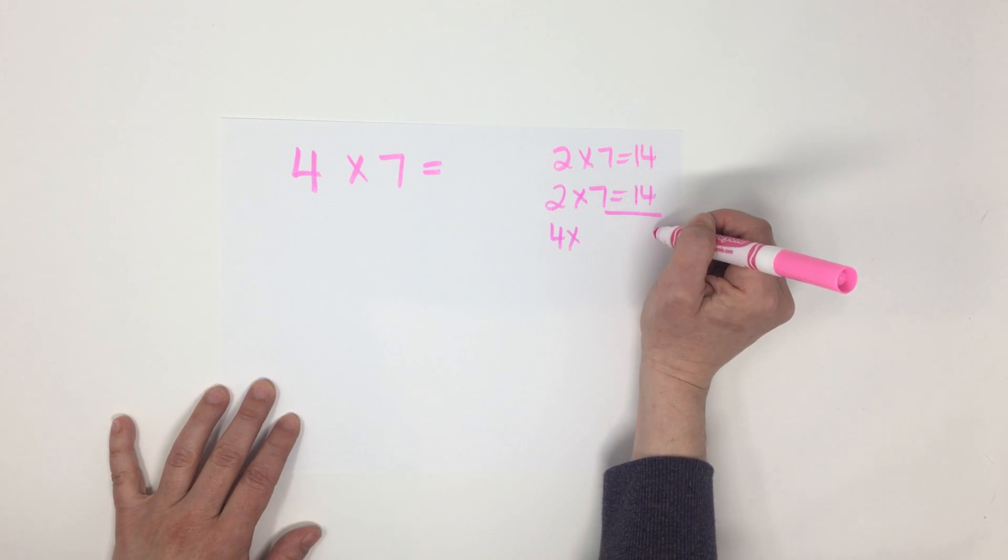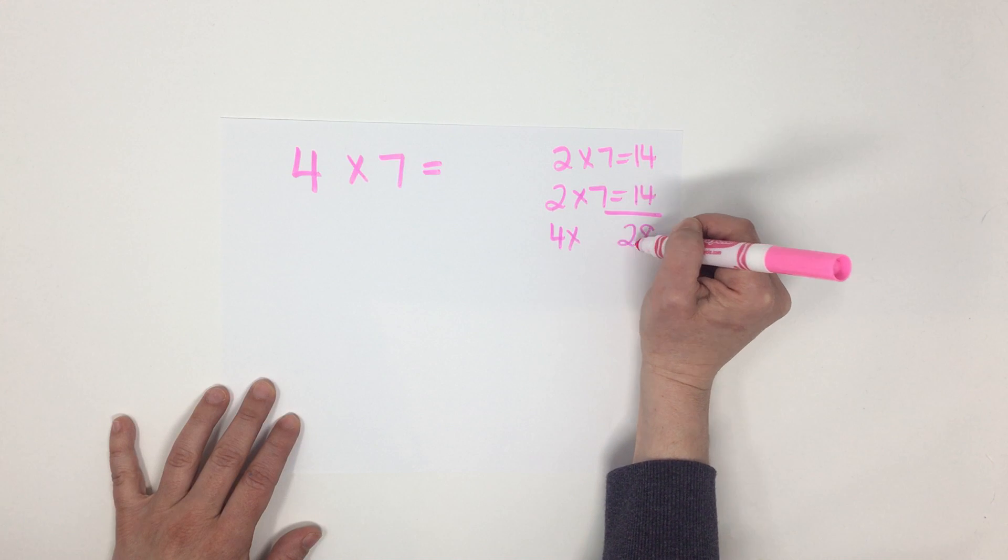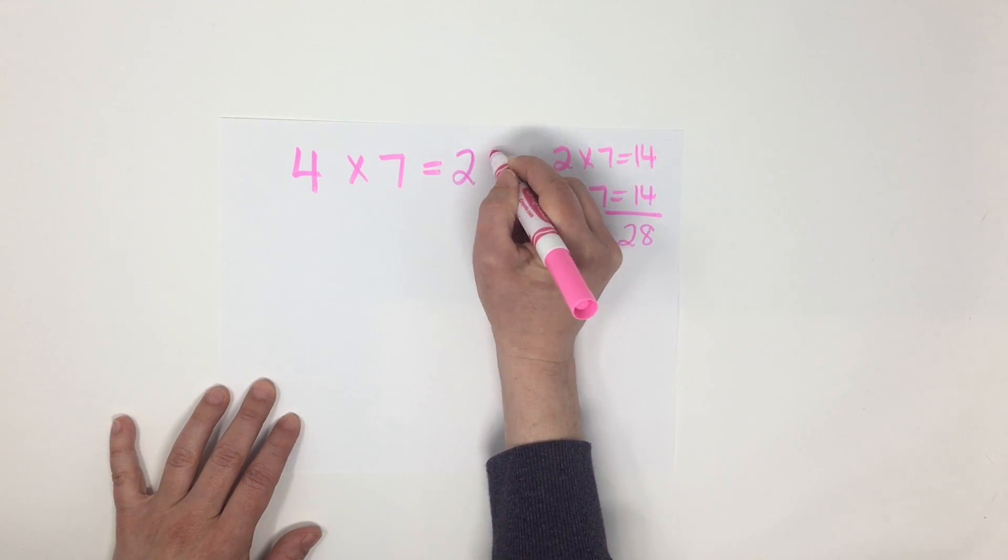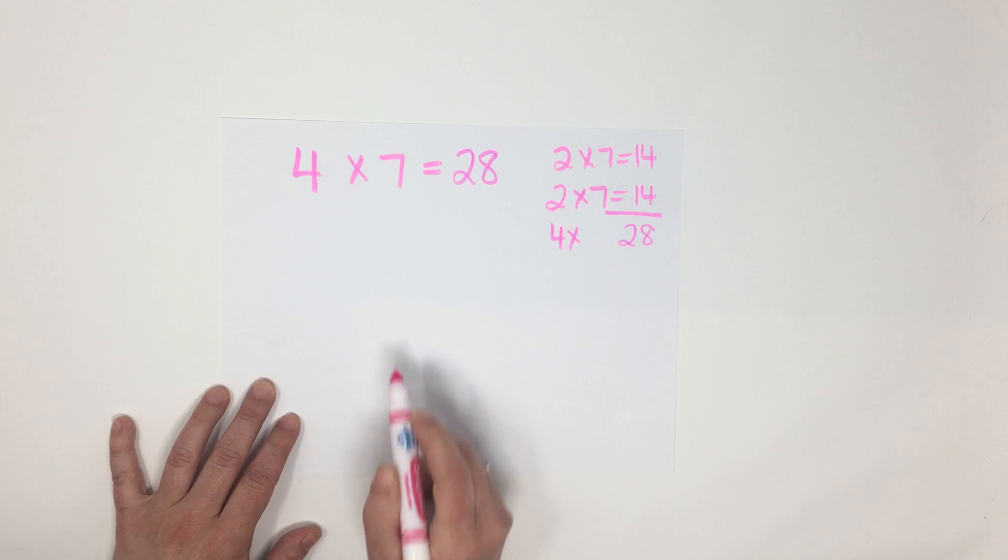14 plus 14 is 28. So that's how I can figure out 4 x 7 is equal to 28.